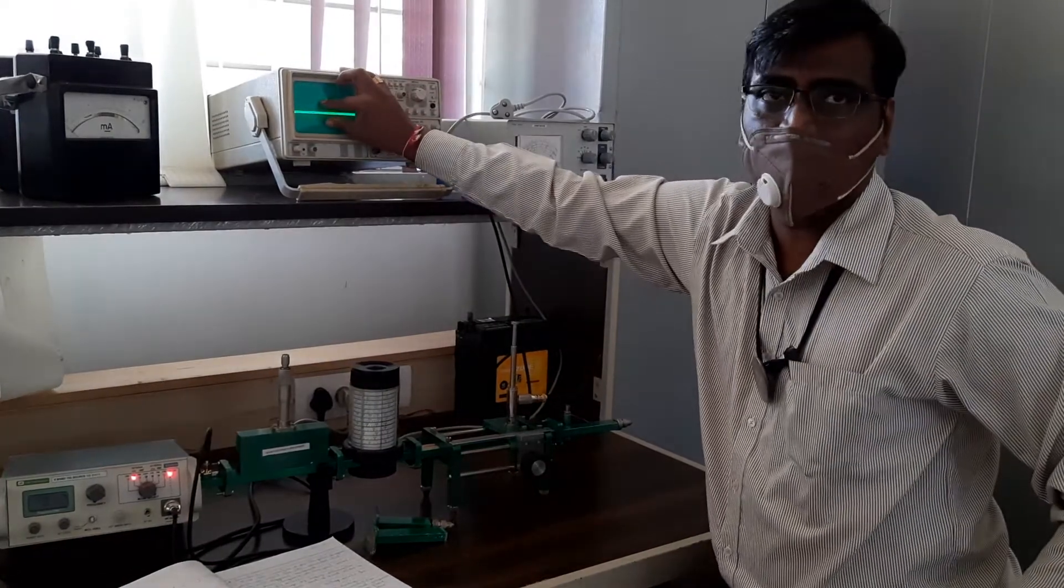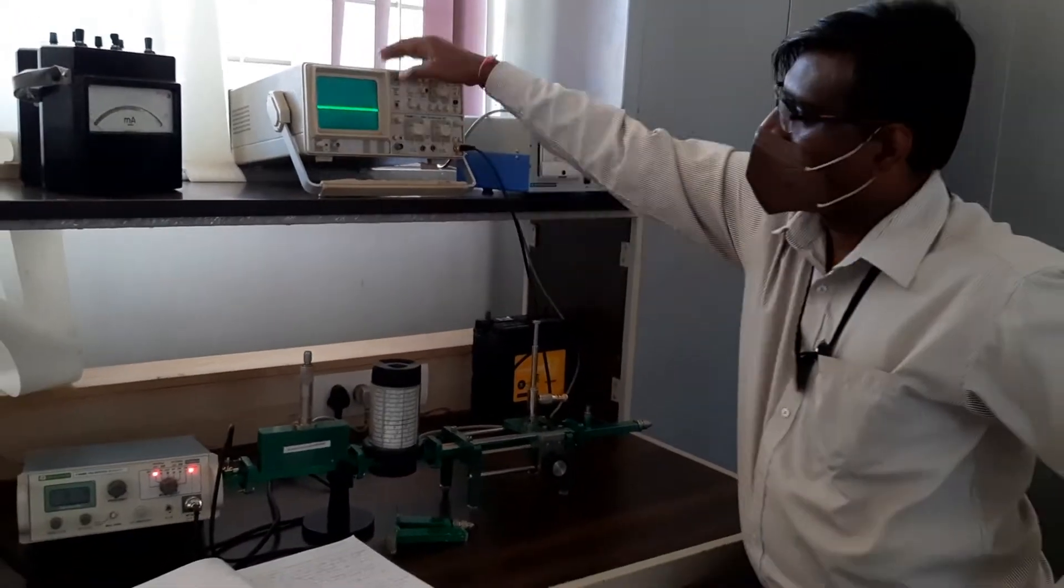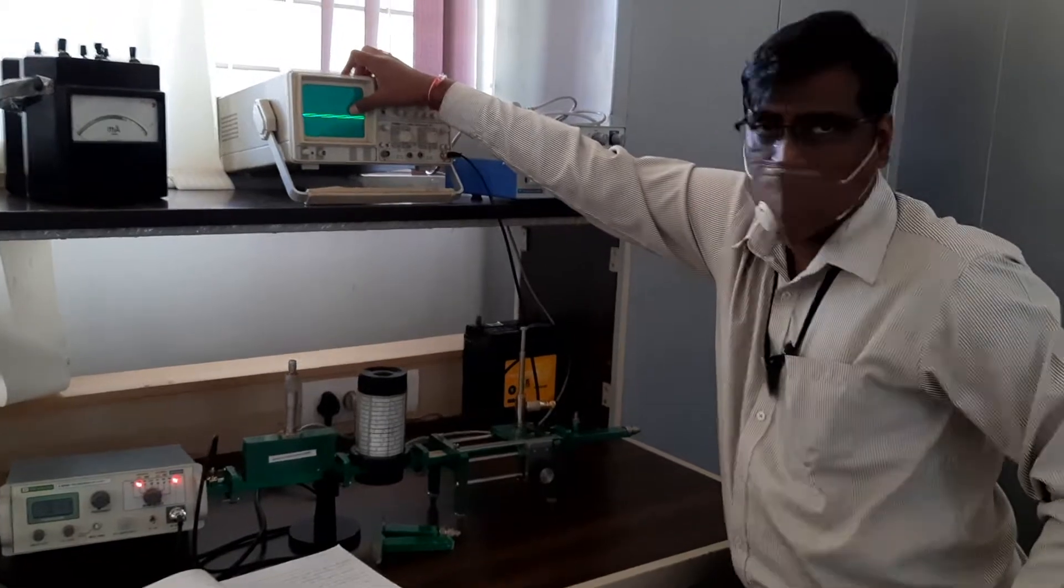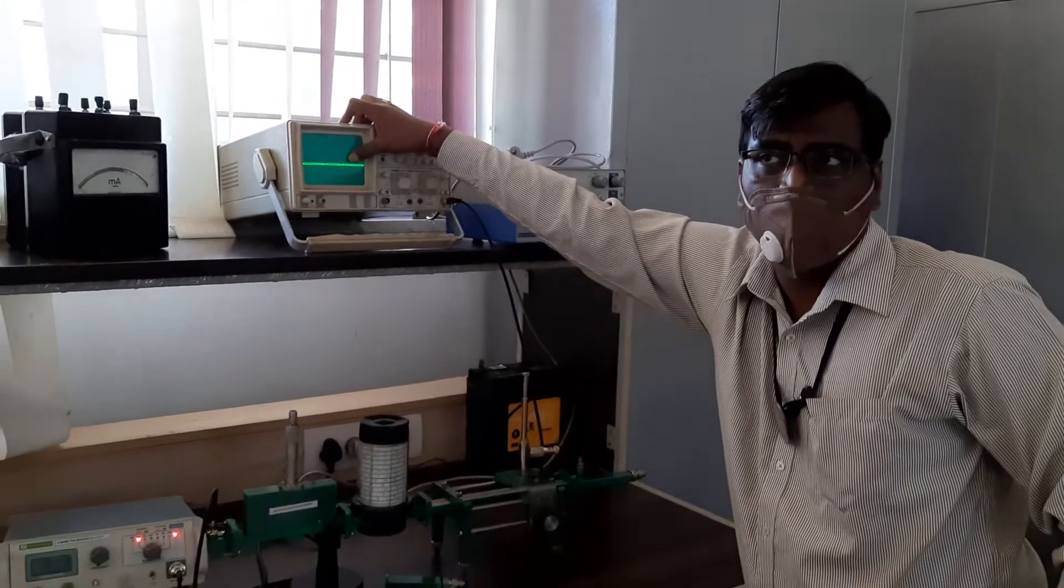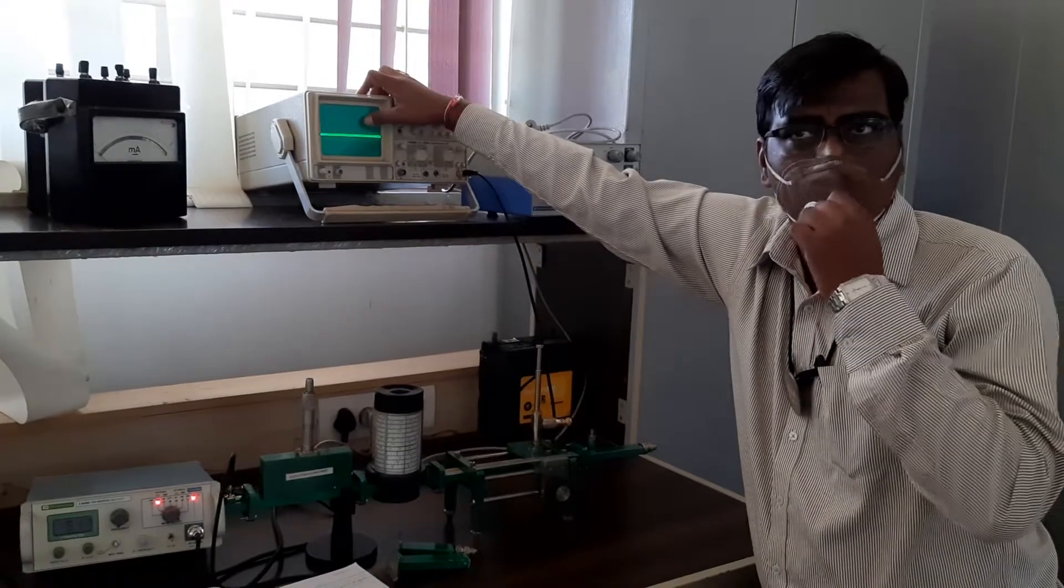Again you will be seeing a square wave, which is nothing but again 1 kilohertz preset. So now we observe some voltage representations over here. Now how do I identify the VSWR value?